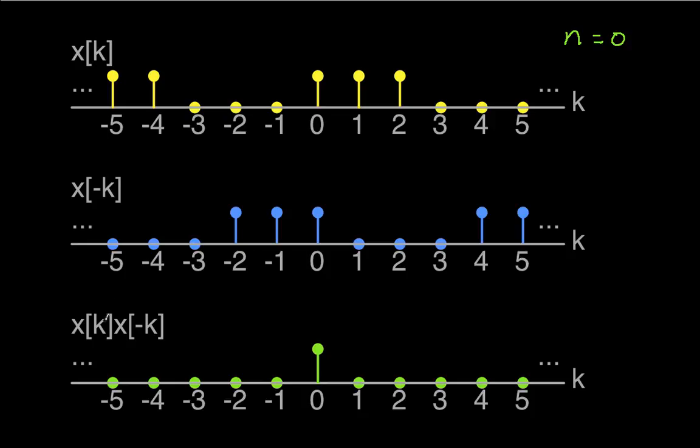So we flip this guy, then we multiply X of K and X of minus K together. And there's only one value here where the non-zero values overlap, and the product there is 1.